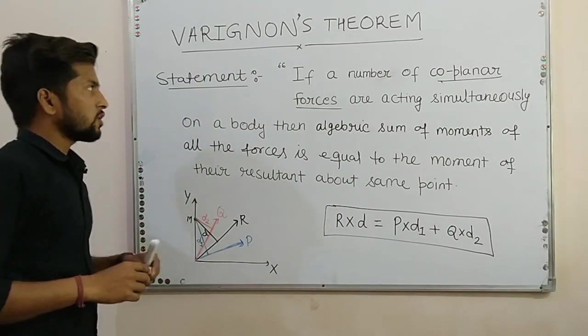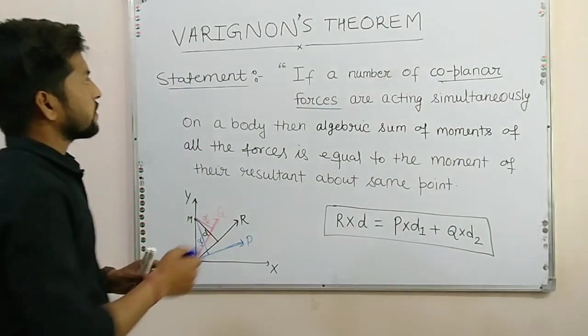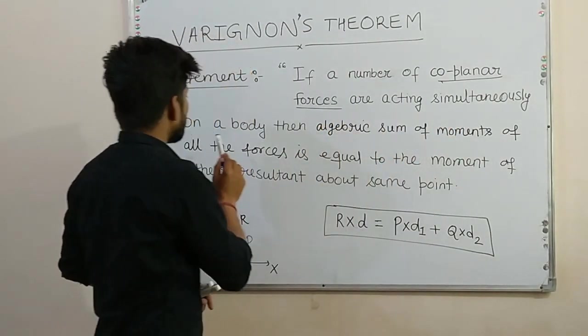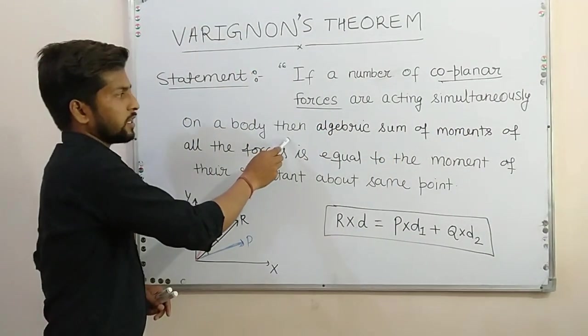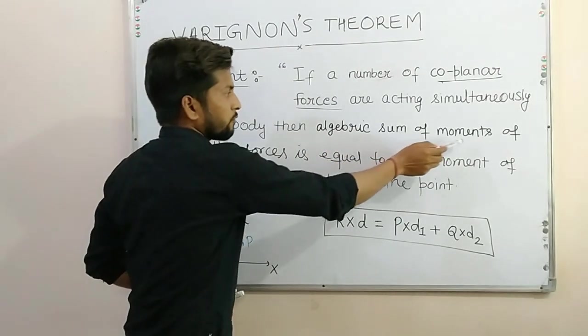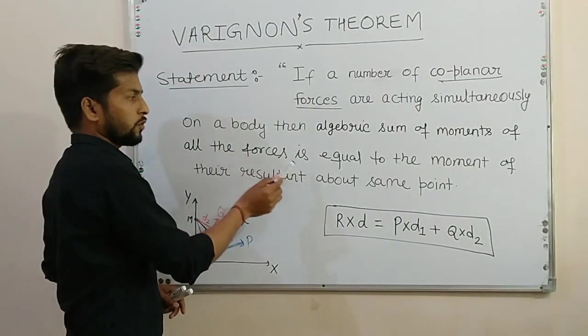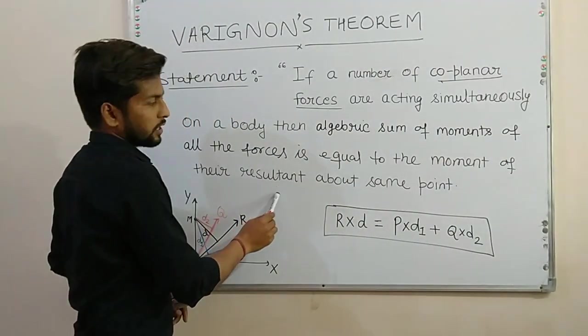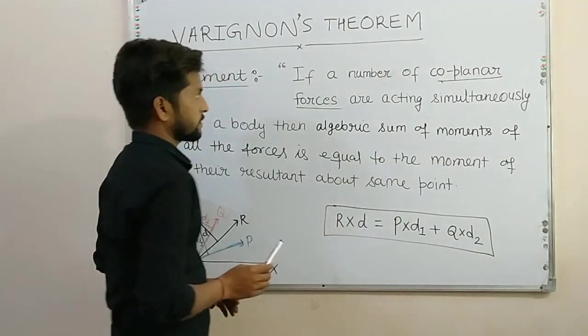What is Varignon's Theorem? It states that if a number of coplanar forces are acting simultaneously on a body, then algebraic sum of moments of all the forces is equal to the moment of their resultant about same point.